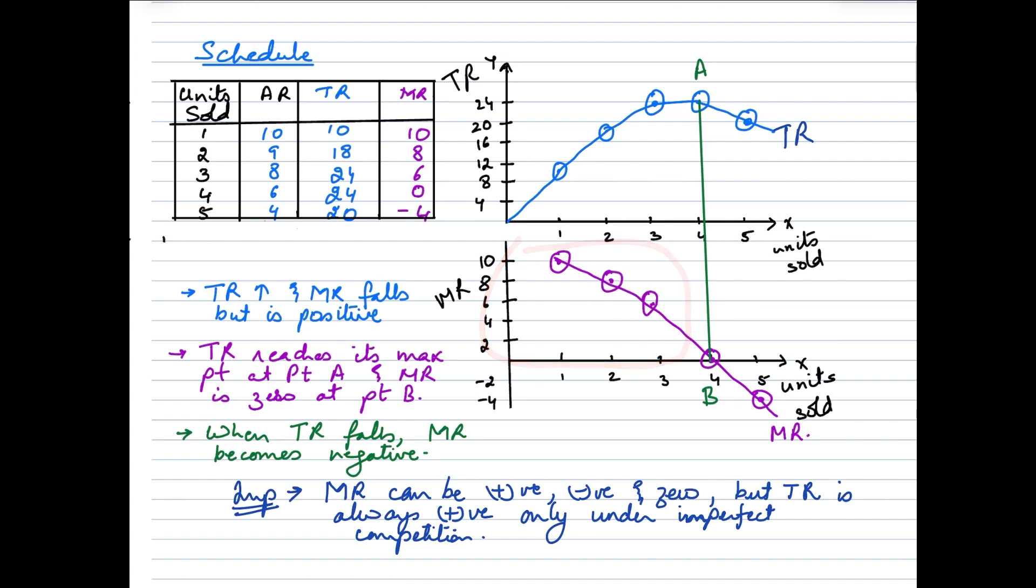The second important aspect here is when total revenue is reaching its maximum at point A, marginal revenue is zero at point B, which I have already highlighted with these green letters A and B.